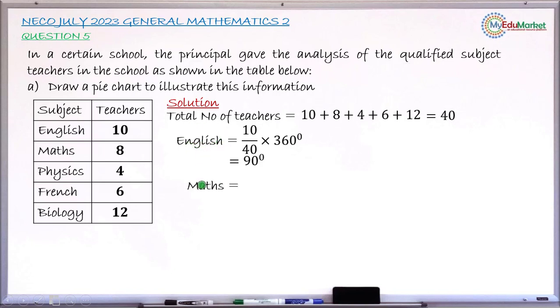If I move to mathematics, it's the same. How many mathematics teachers? It is 8 divided by the total multiplied by 360, and if this is done correctly, you have 72 degrees. The next is the Physics. You have 4 teachers divided by 40 multiplied by 360. This angle will now be 36 degrees for Physics.